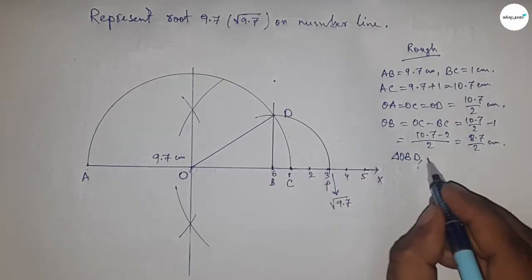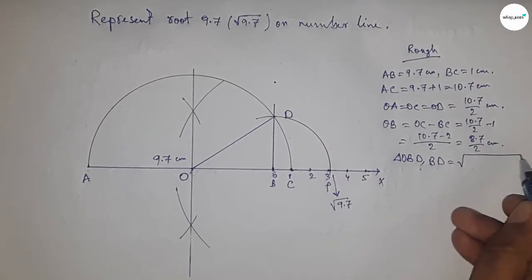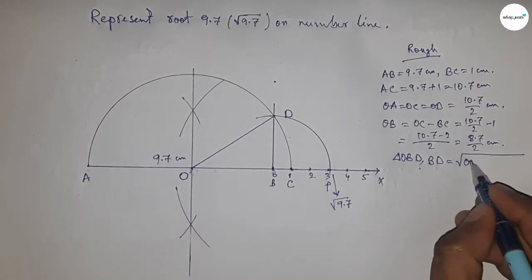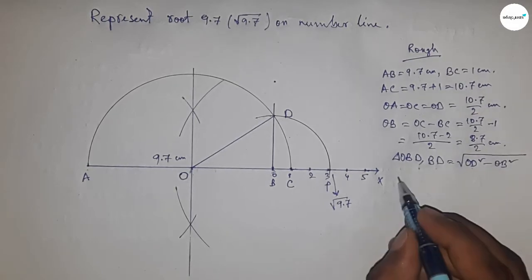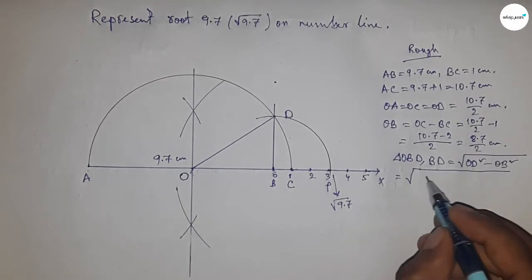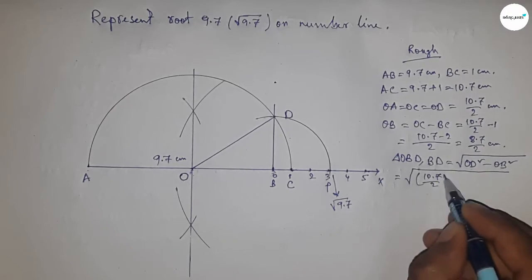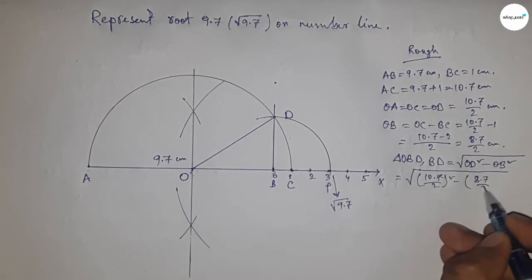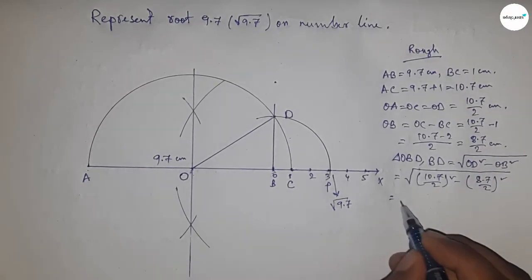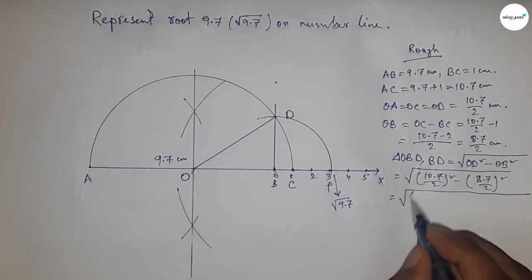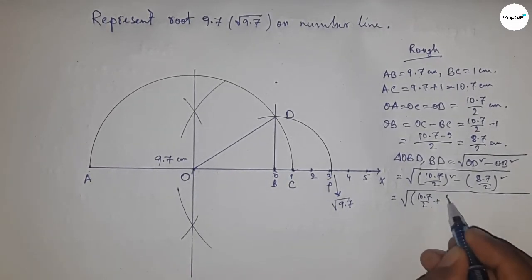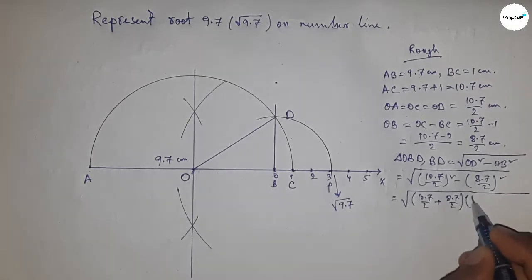Putting the values of OD and OB, we get the square root of (10.7/2)² minus (8.7/2)². Now apply the formula a² minus b² equals (a plus b)(a minus b).